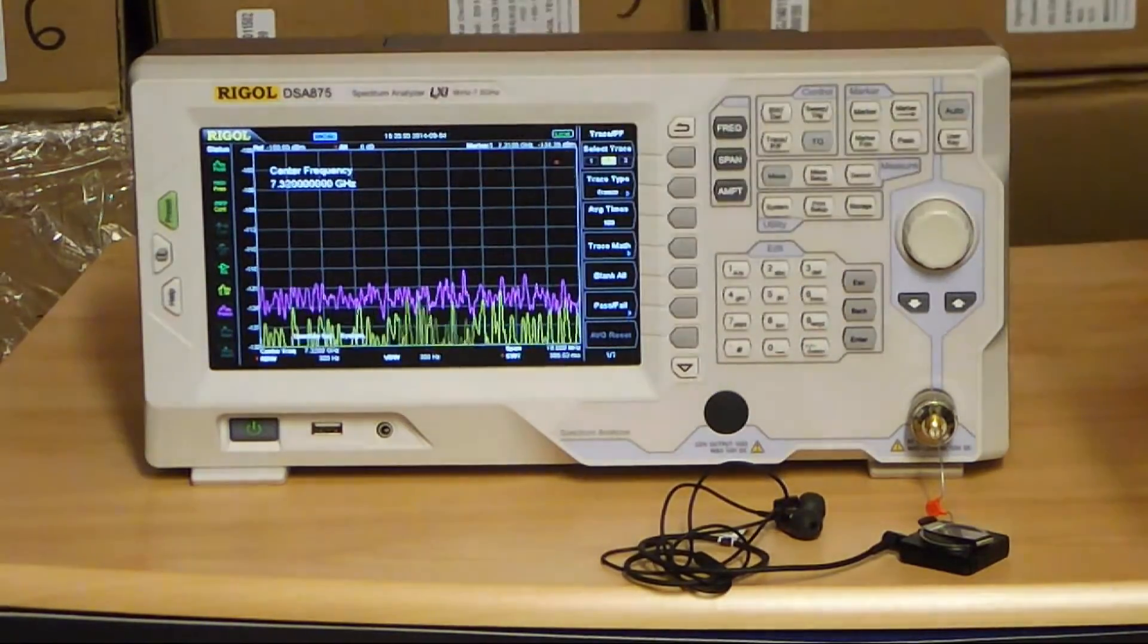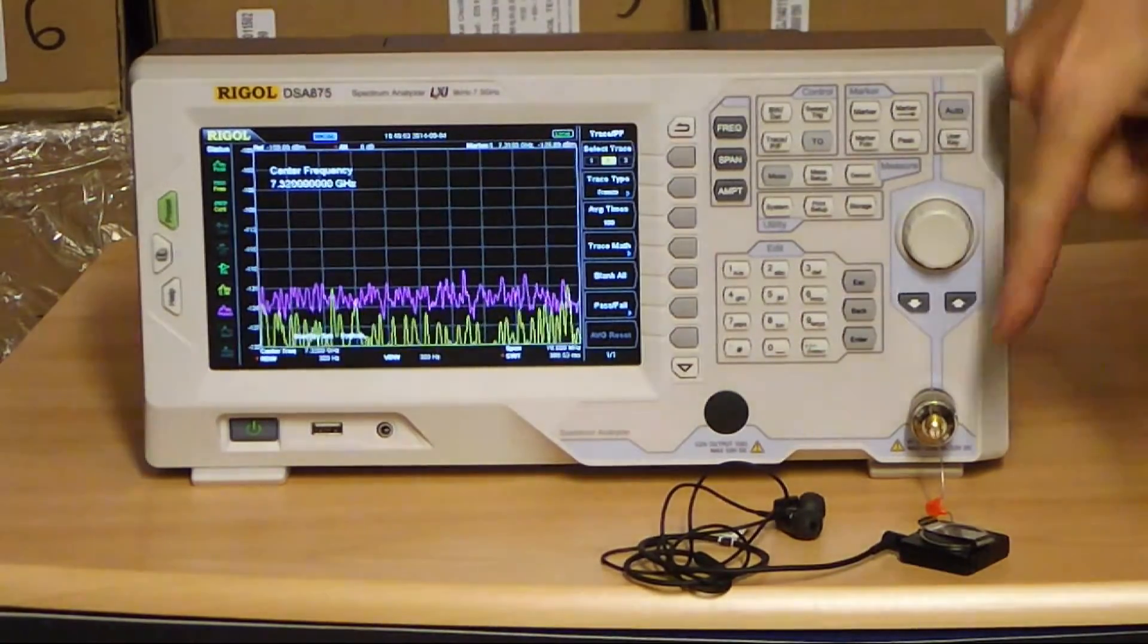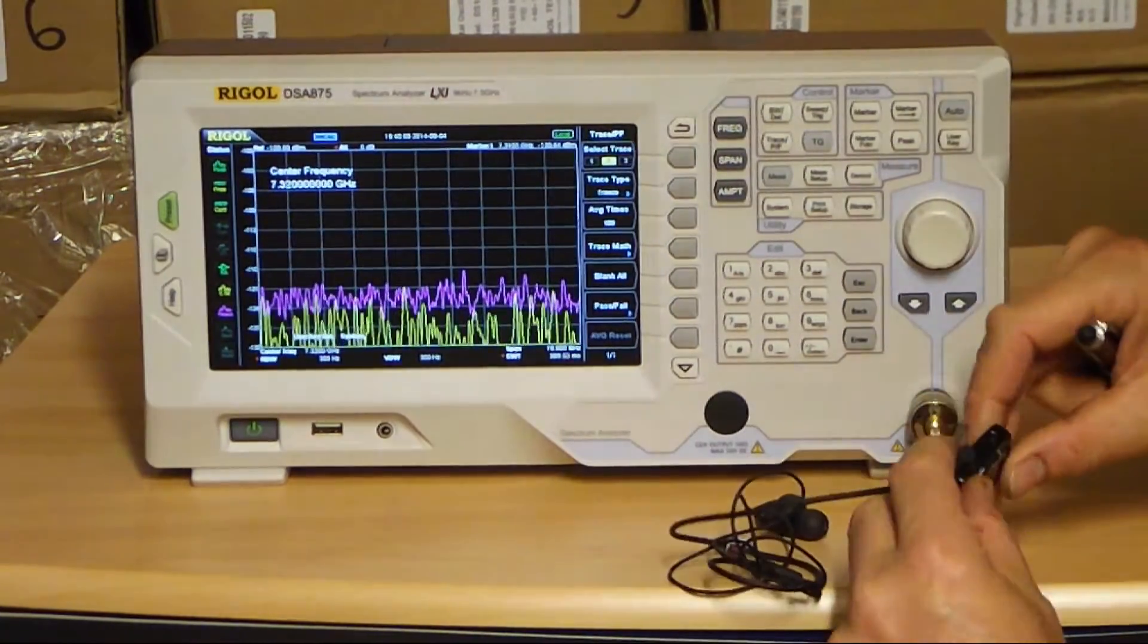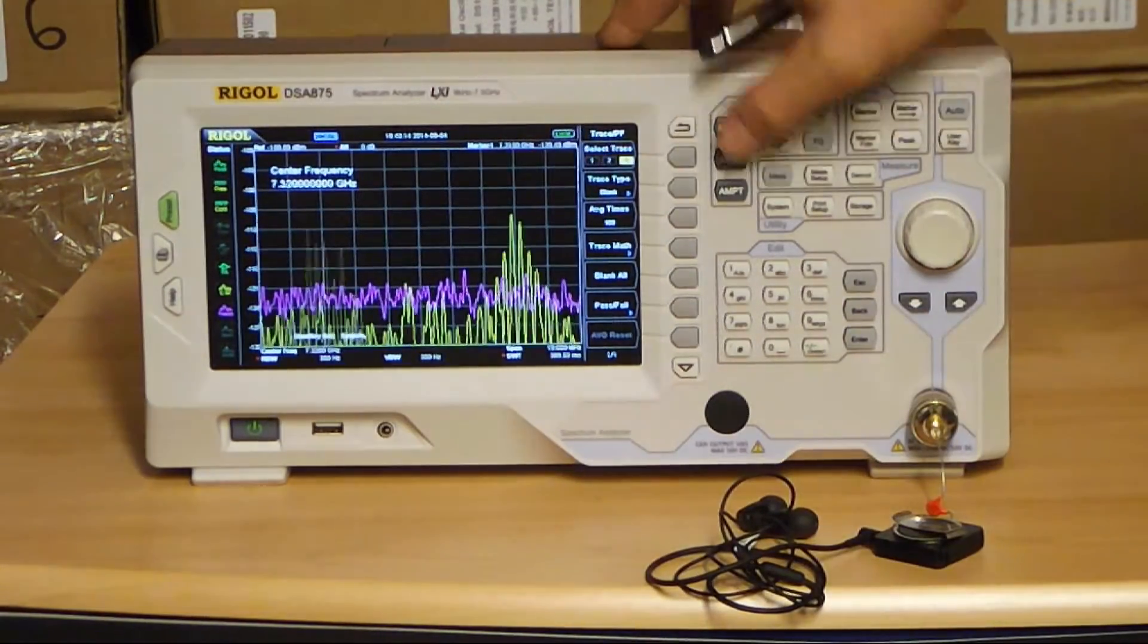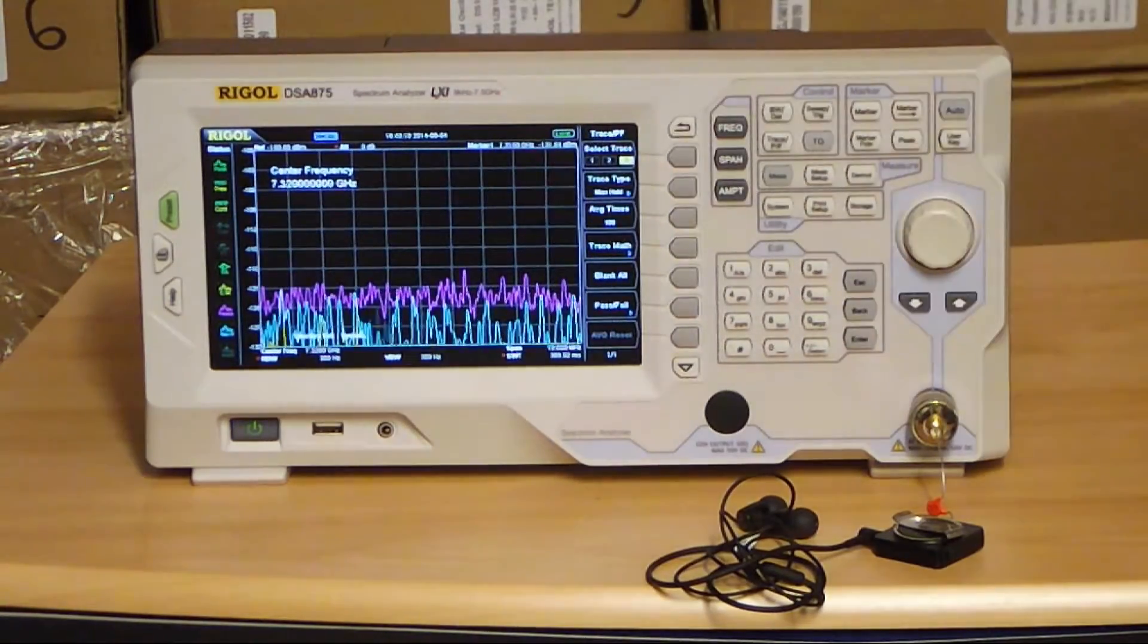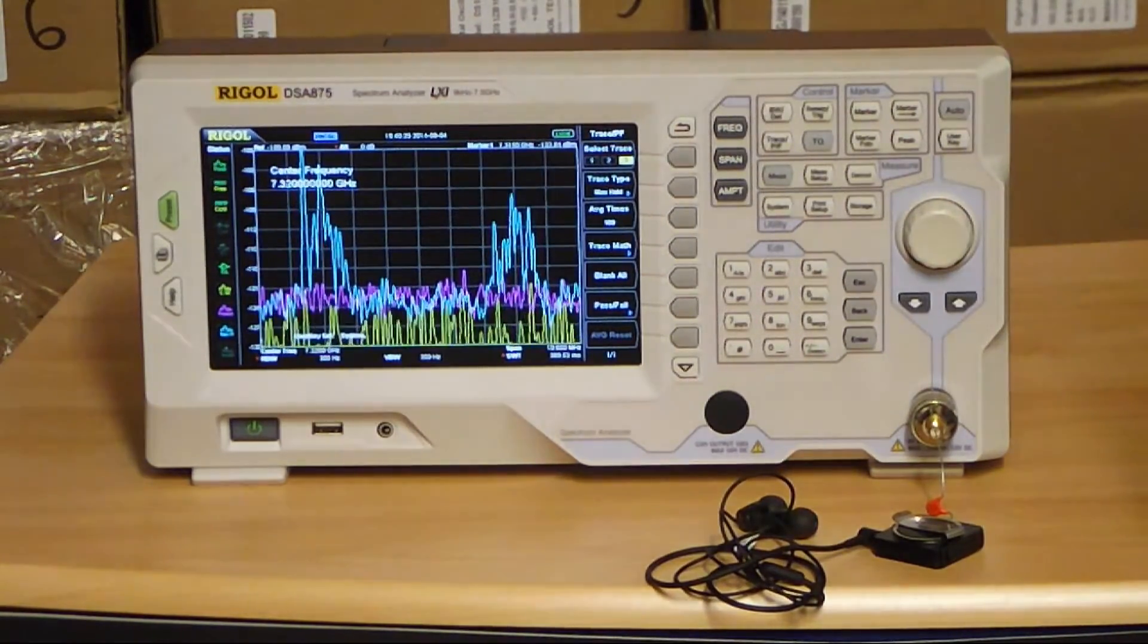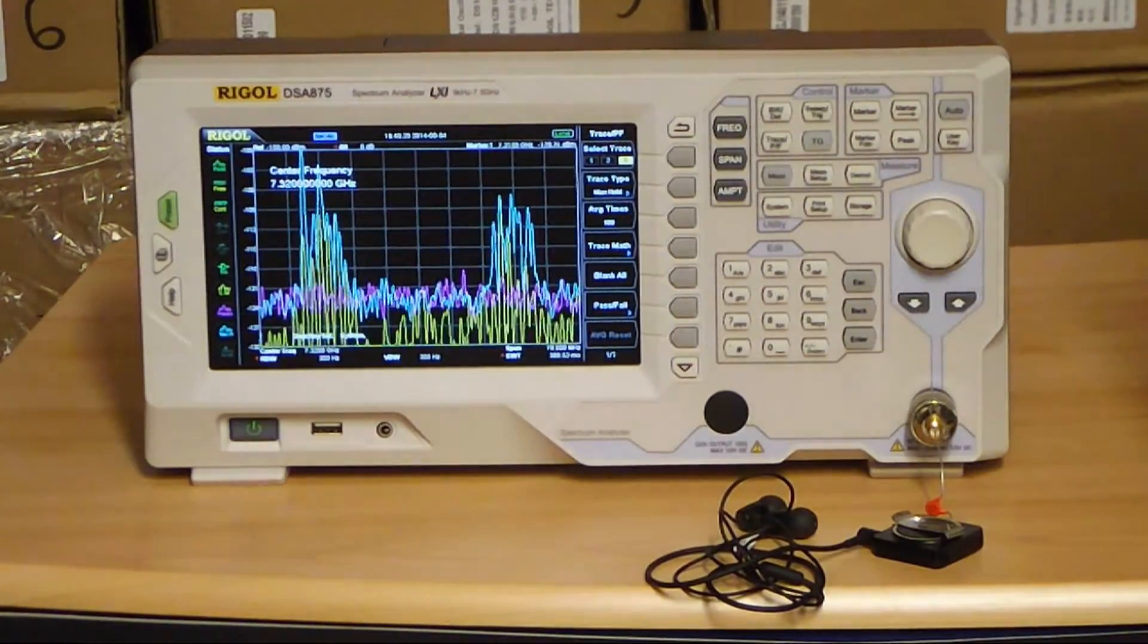So I'm now going to freeze that trace. That purple trace is now my baseline of noise at 7.32 GHz. Now watch what happens when I turn on my little earpiece. I'm going to turn it on and let it look for signals. And I'm going to ask trace three, whoa, look at that, to be the max hold. And I'm going to go looking for those third harmonic frequencies. Oh, look at them building up there. That's a beautiful picture of the third harmonic of that Bluetooth headset.